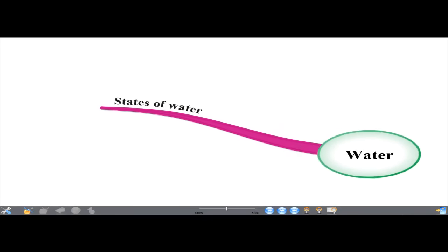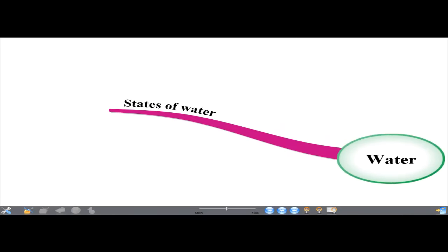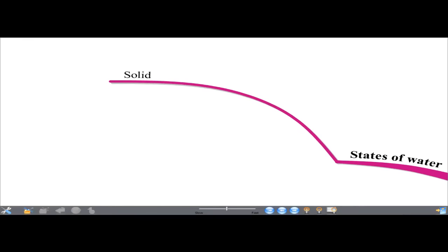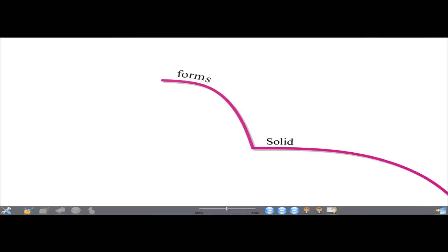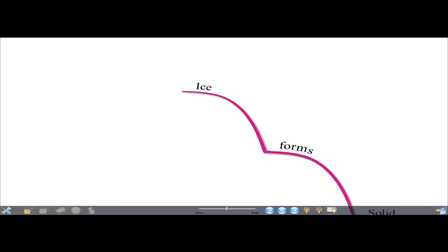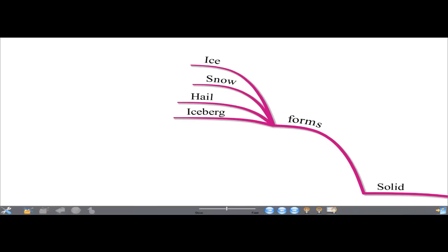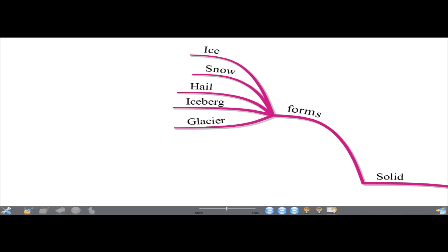Water has three states. In the solid state, water is available in different forms: ice, snow, hail, iceberg, and glacier.